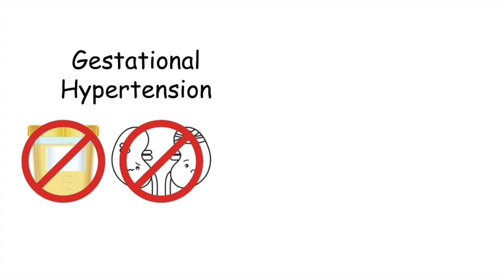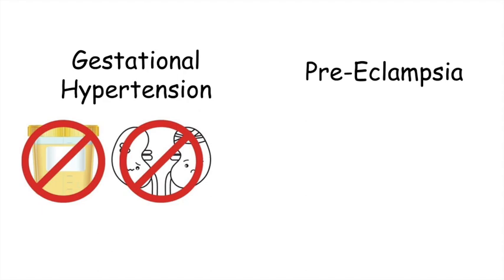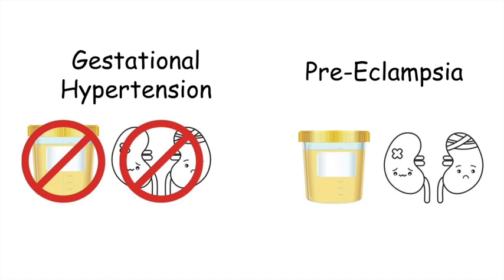In preeclampsia, it also includes new onset elevated blood pressure at greater than 20 weeks gestation. However, it also includes proteinuria or end organ damage. So hopefully this visual will help you to remember the differences between gestational hypertension and preeclampsia.